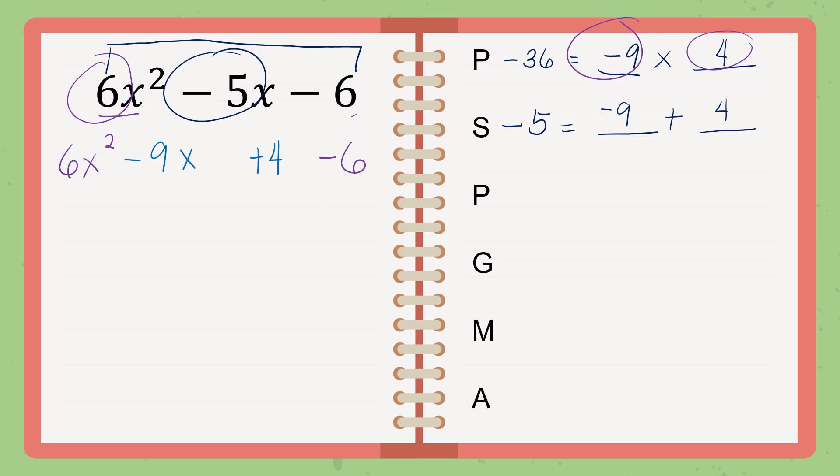Then, what we got, that is negative 9 and positive 4. Then, add x to them. Okay? Next steps, parenthesis. Make parenthesis around them. 6x squared minus 9x. Next step, after we make a parenthesis...